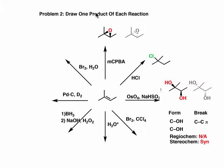Since the question asks us to draw one product, either one of these would be acceptable. Just like with epoxidation, we're adding the same group — in this case OH — to both carbons of the alkene, so it's neither Markovnikov nor anti-Markovnikov. For that reason, we put non-applicable for regiochemistry. However, the stereochemistry is very important. Notice that the two OH groups both have wedges — or dashes — which is to say they've both added to the same face of the alkene. So the stereochemistry here is syn.